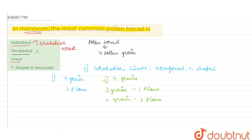If we talk about the next option, which is linear: the first division of the pollen mother cell is transverse and it further divides to form a linear tetrad — so that would be an incorrect option. Similarly, T-shape is also transverse in arrangement, making it an incorrect option as well.